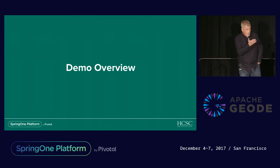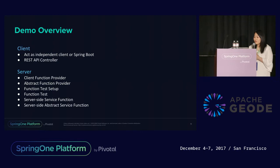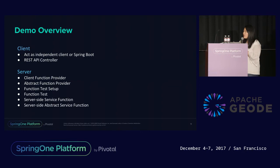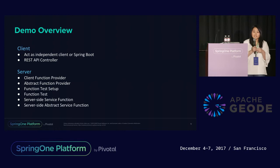We're going to show you a demo overview, sharing code snippets of the REST client and the server component. The REST client can be either independent or a Spring Boot application, and it will have a controller that calls the Apache Geode function. The server is where the function is defined. We divided the function into two parts — one for client and one for server — and added abstract classes to make it easier to add new functions in the future.